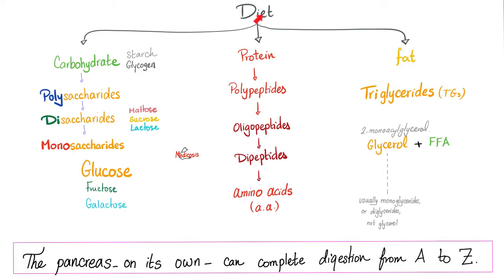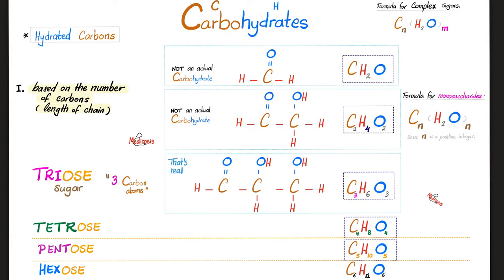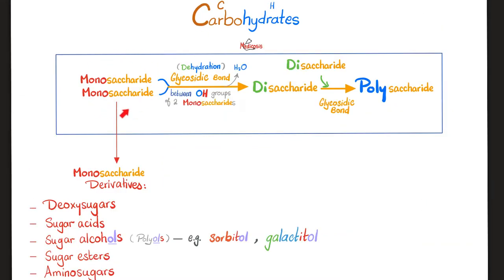Your diet consists of carbohydrates, proteins, and fats. Carbohydrates are called carbohydrates because they are hydrated carbons. Glucose is a hexose and a monosaccharide. Monosaccharide derivatives include something called sugar alcohols, i.e. polyols. If it ends in 'ol', it has an alcohol group, as in cholesterol. Sorbitol and galactitol are sugar alcohols, i.e. polyols.